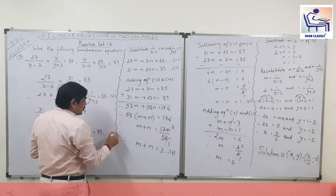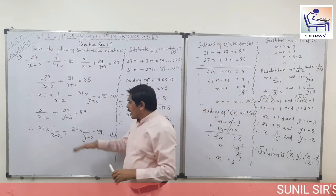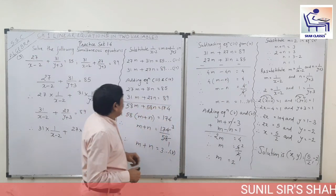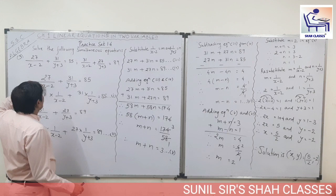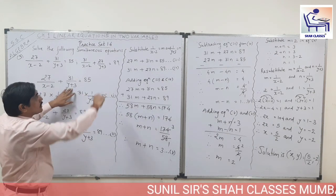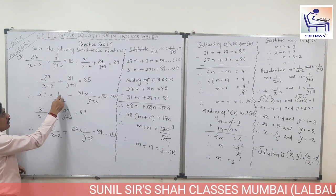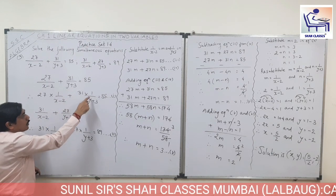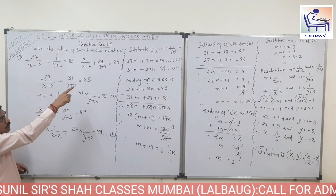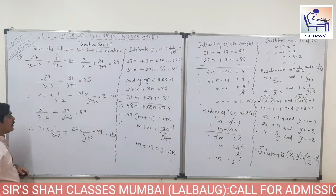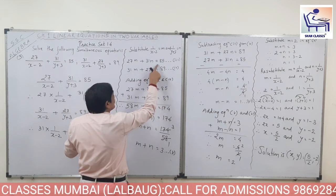I want to recap the overall sum. This sum takes four pages — you can adjust the length according to your paper. From the first equation we got 1 upon (x minus 2) as M and 1 upon (y plus 3) as N. Since these are in the denominator, we write 1 upon (x minus 2) and separate it to convert to another variable. So 1 upon (x minus 2) converts to M and 1 upon (y plus 3) converts to N.